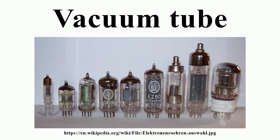The simplest vacuum tube, the diode, contains only a heater, a heated electron-emitting cathode, and a plate. Current can only flow in one direction through the device between the two electrodes, as electrons emitted by the cathode travel through the tube and are collected by the anode.